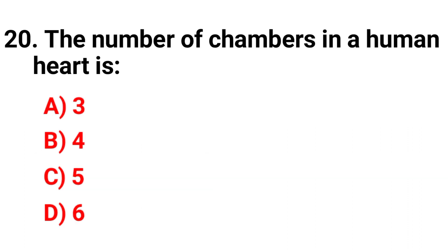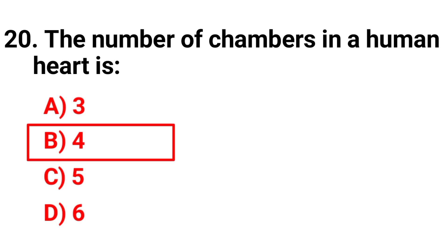Question 20: The number of chambers in a human heart is — option A: 3, B: 4, C: 5, D: 6. The correct answer is option B — 4.